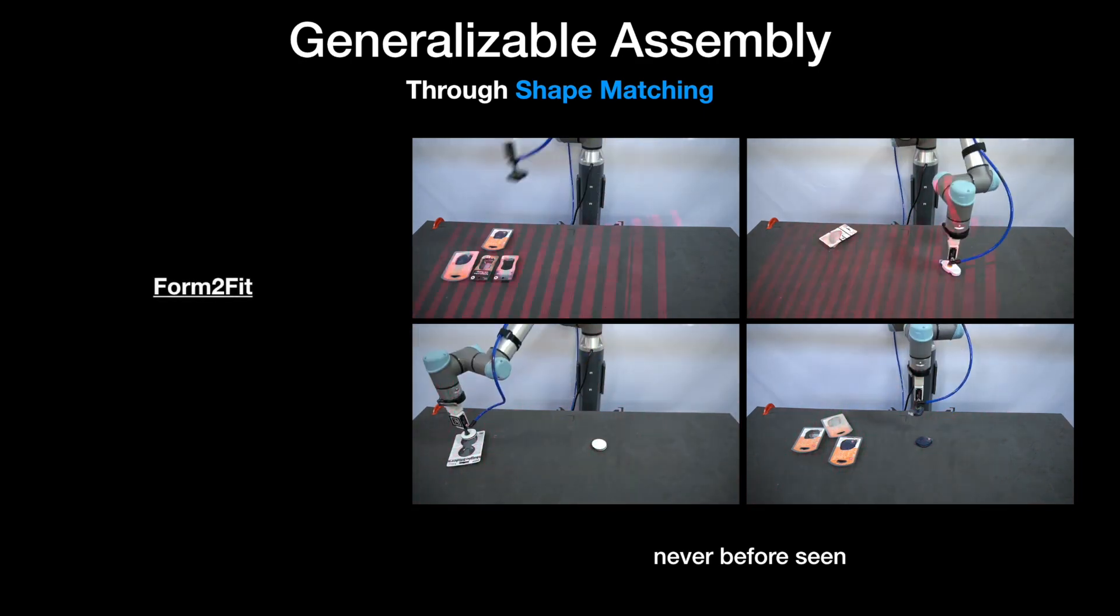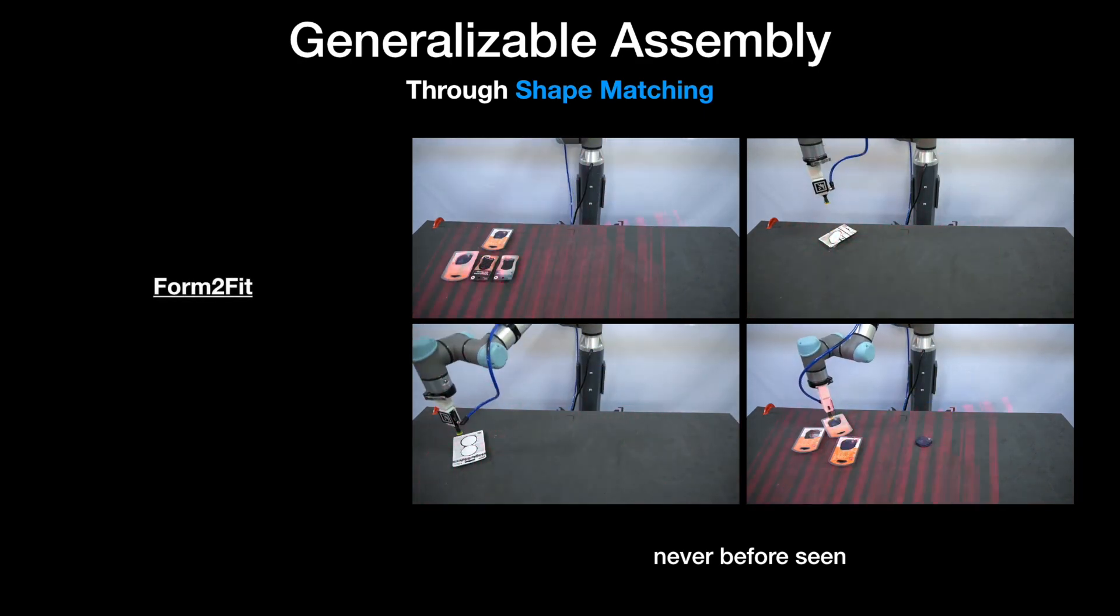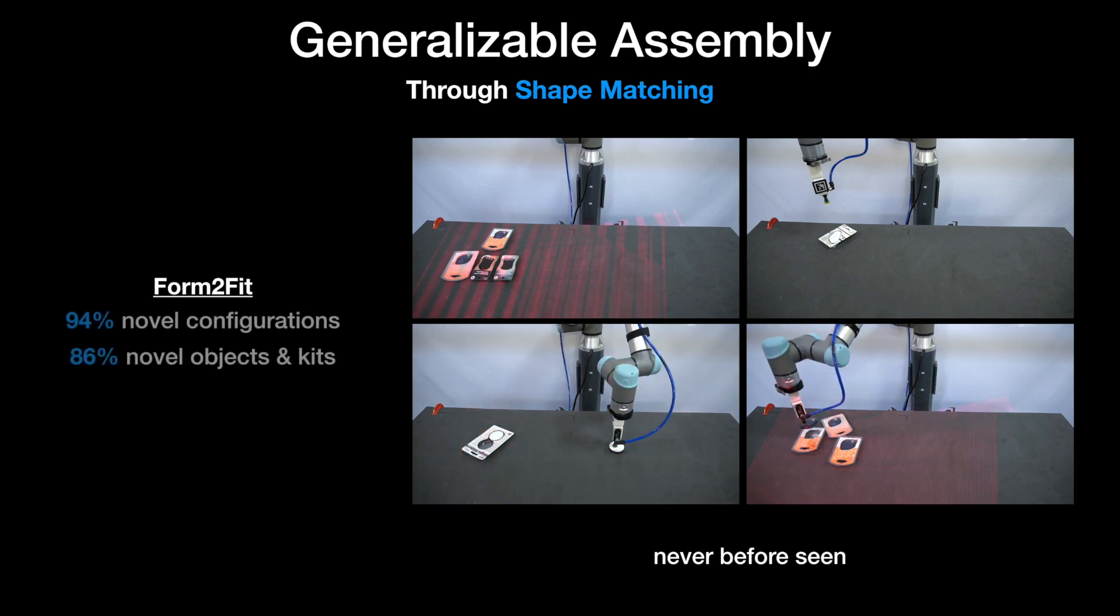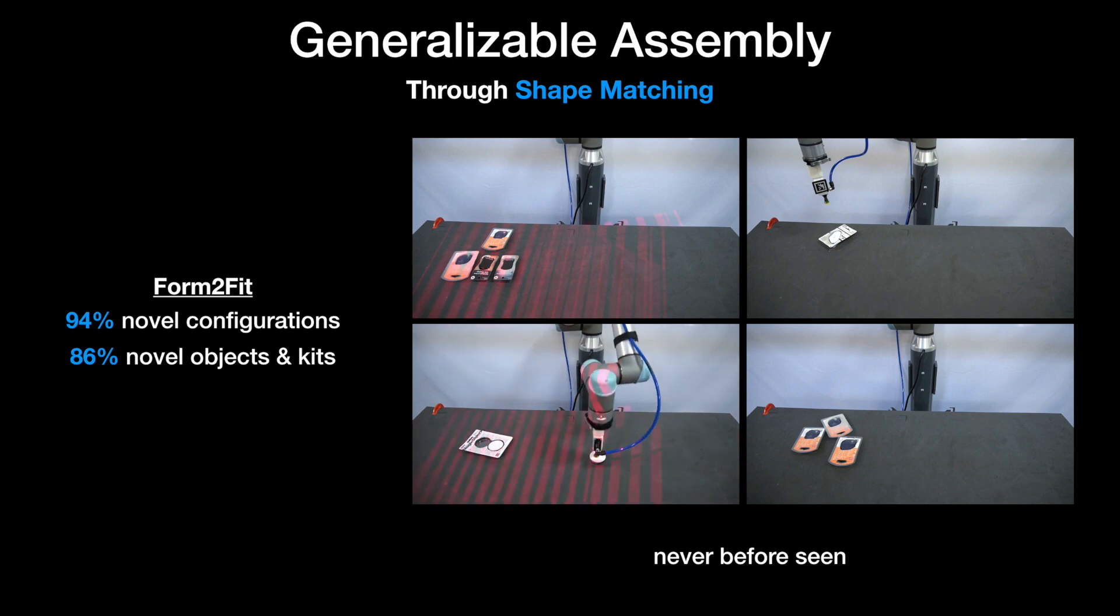We call our resulting real-world system Form2Fit and it learns effective pick-and-place strategies that achieve over 94% average assembly accuracy on novel kit configurations and 86% success on completely new objects and kits.